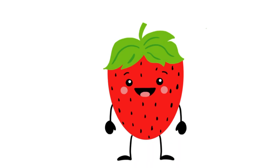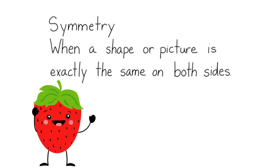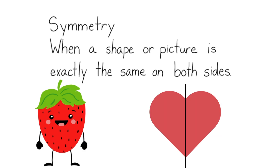Hello everyone, today we are going to be learning about symmetry and asymmetry. Symmetry is when a shape or a picture is exactly the same on both sides. If we look at this heart and I draw a line down the middle of it, we can see that both sides are the same.